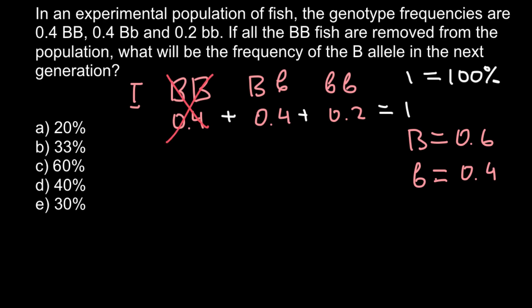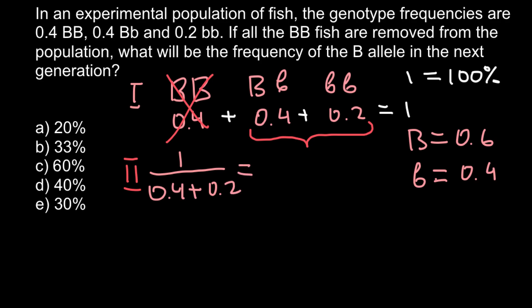We are told to remove the homozygous dominant genotype. In the next generation, only the heterozygous and homozygous recessive genotypes remain. However, 0.4 plus 0.2 does not equal 1, so we must normalize. We divide 1 by 0.4 plus 0.2, which gives us a scaling index of approximately 1.67, by which we multiply these numbers to increase them proportionally.